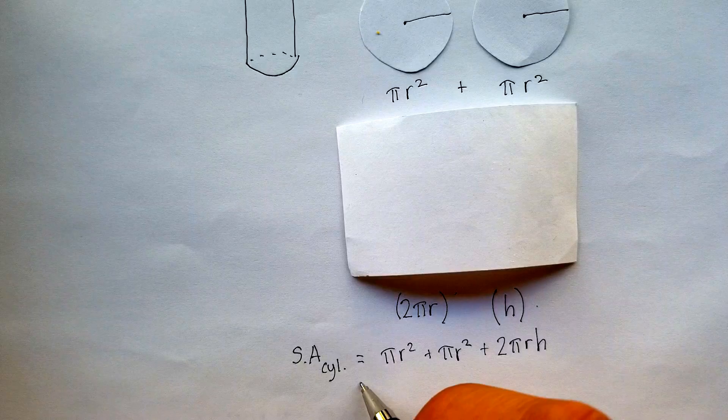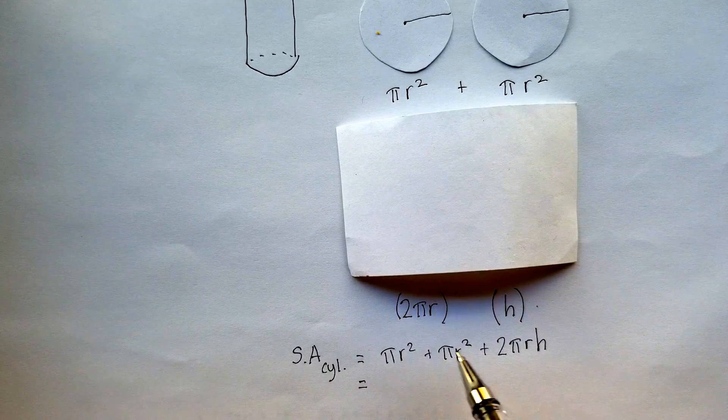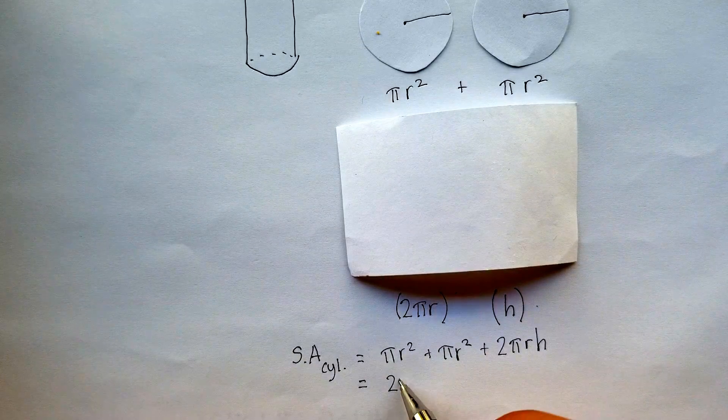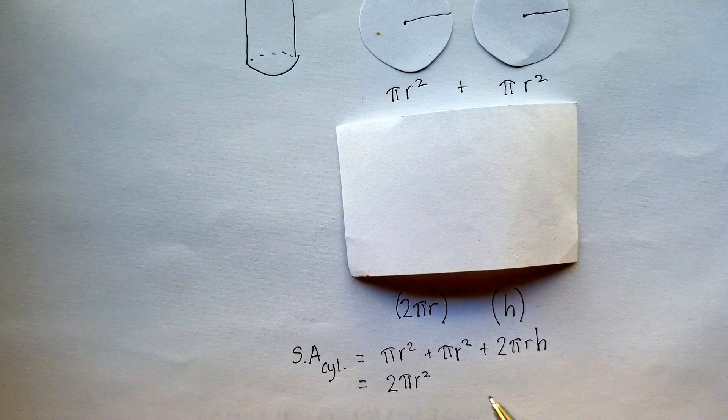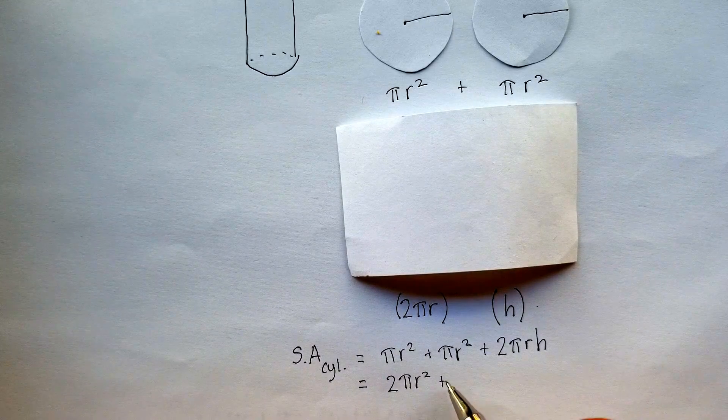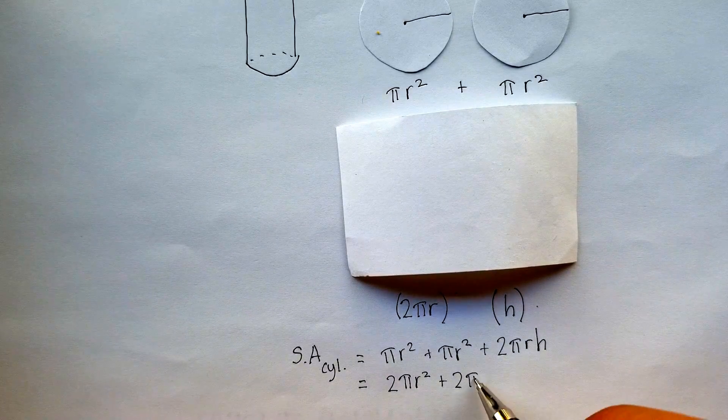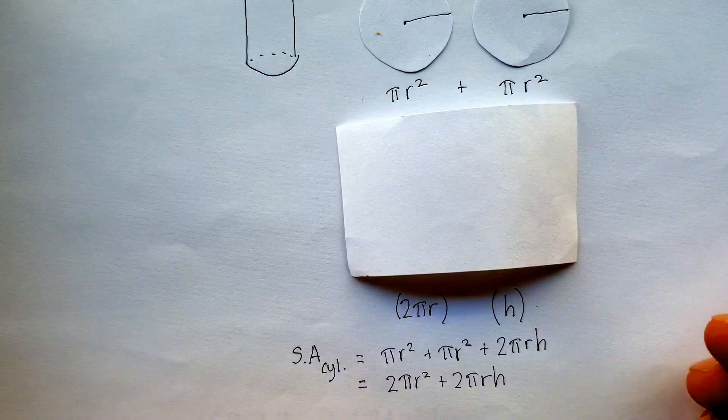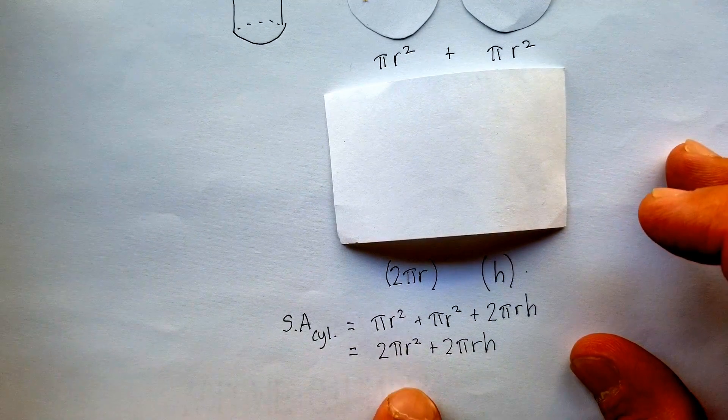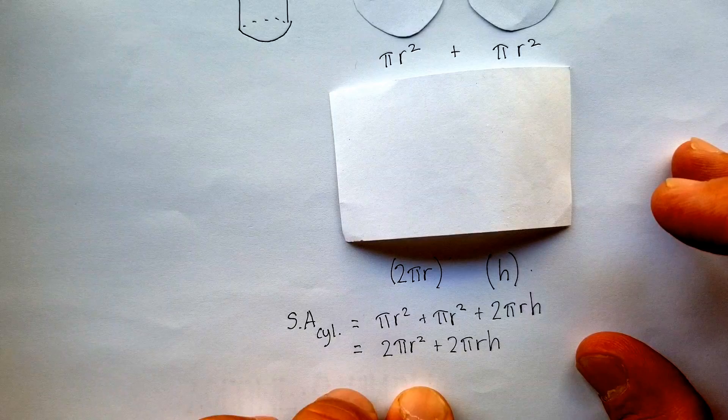Now let's gather like terms. There's 2 of these, so we have 2πr² plus 2πrh. And actually, that is a totally acceptable formula.